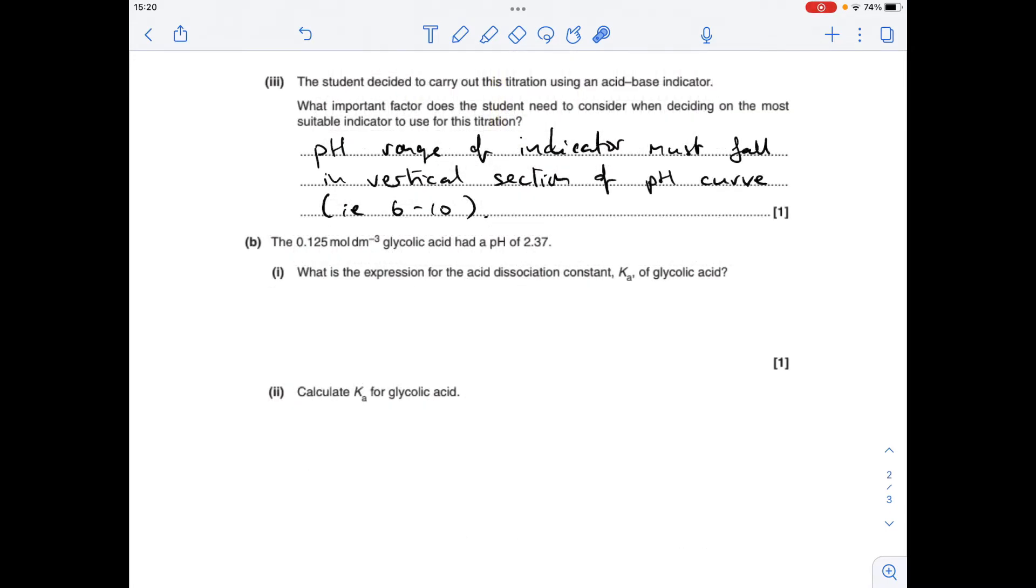And the final part of it, what important factor does the student need to consider when deciding on the most suitable indicator? So I've already got it written in there. The pH range of the indicator must fall in the vertical section of the pH curve. So on the curve that we were presented with, that's roughly between 6 and 10 pH-wise.